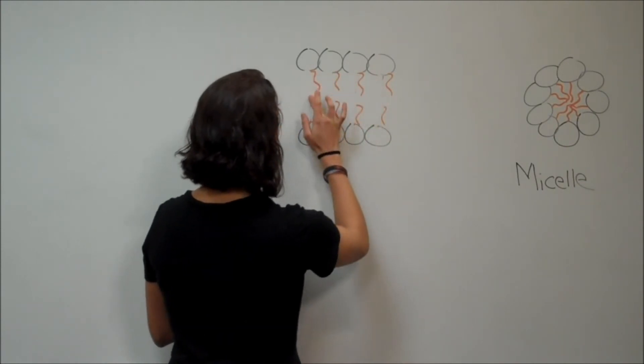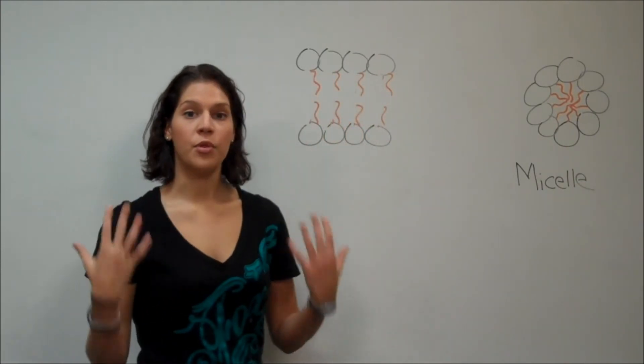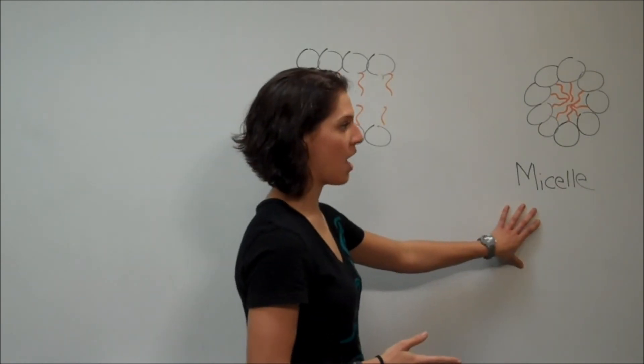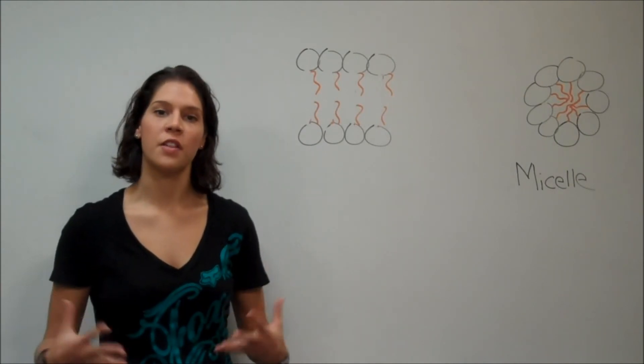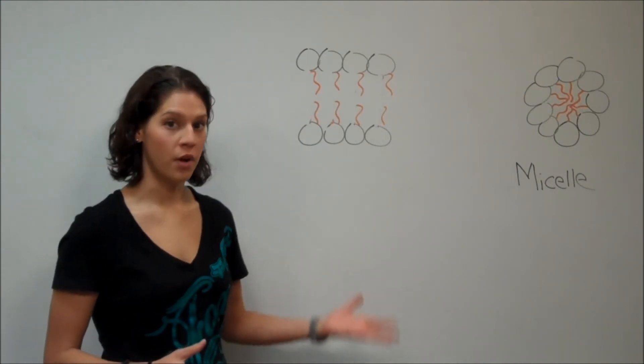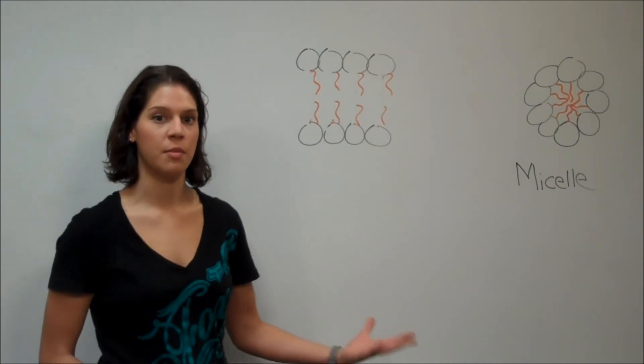And now, since these have one fatty acid, the most stable form of these fatty acids is to become a micelle. So snake venom would cause the glycerophospholipids to only have one fatty acid, and the most stable form would be in its micelle form.